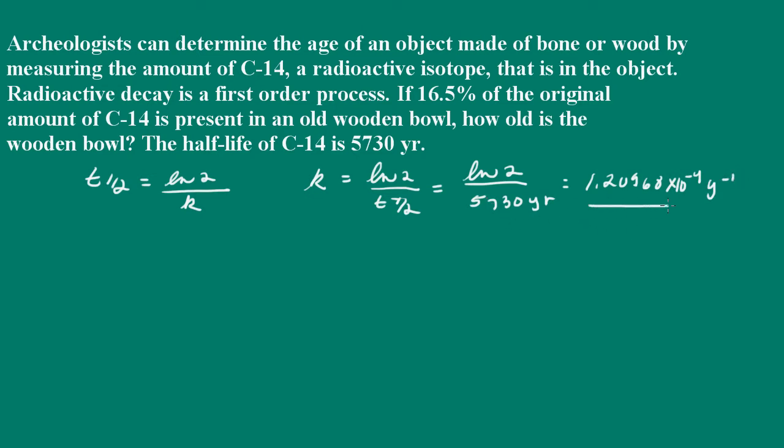Okay, so we have this. We'll take care of significant figures in a minute. So now what we need to do is use the first-order integrated rate law to determine the age of the wooden bowl. So let's go ahead and set that up.